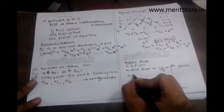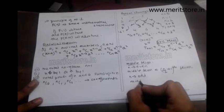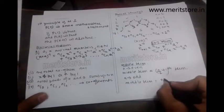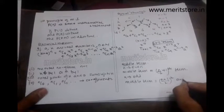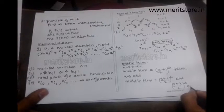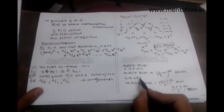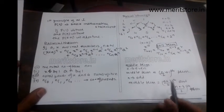In case n is odd, the middle term will be n plus 1 by 2 and n plus 3 by 2 term. If you observe, when n is odd there are 2 middle terms, and when n is even there is only 1 middle term.